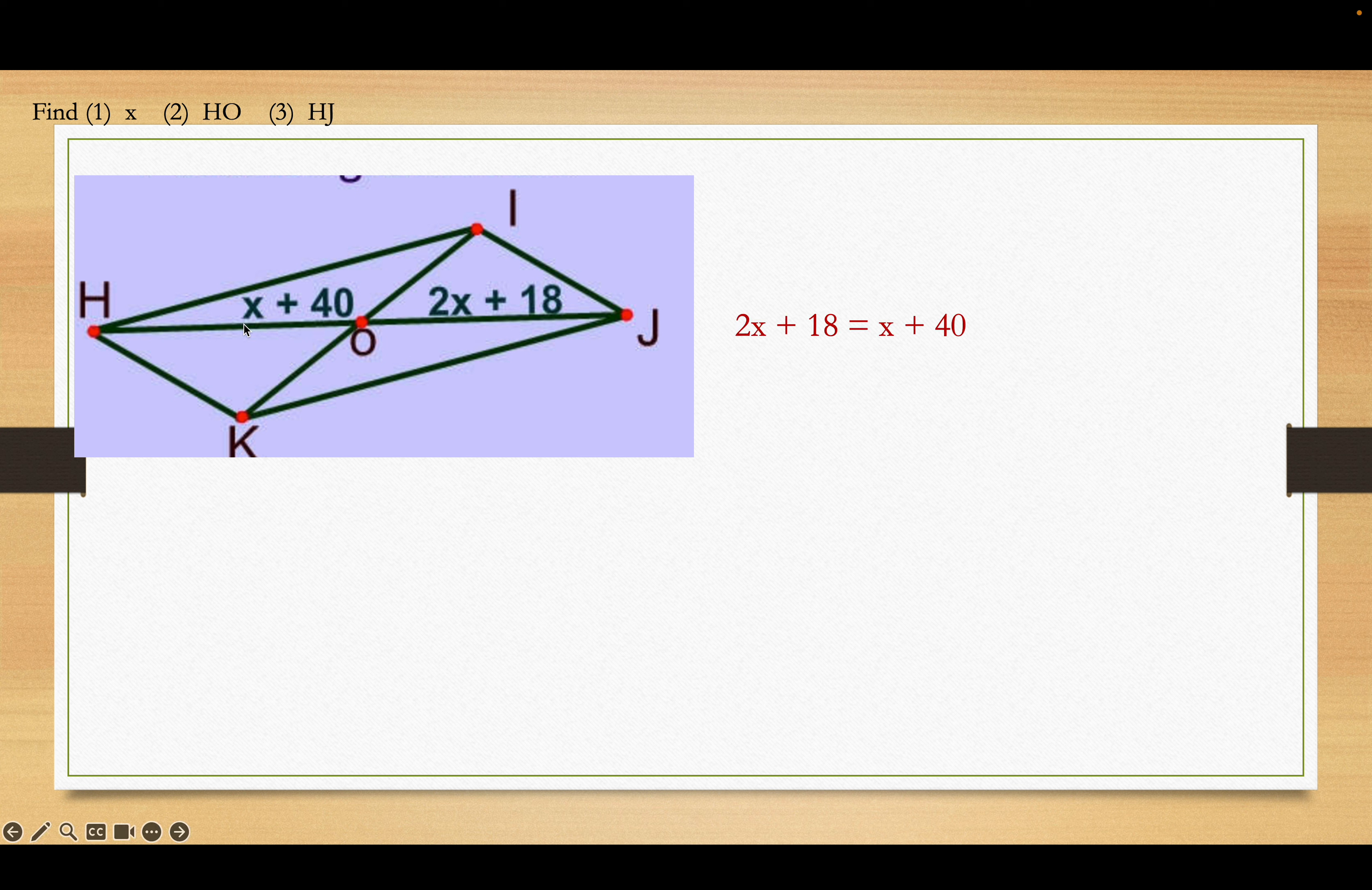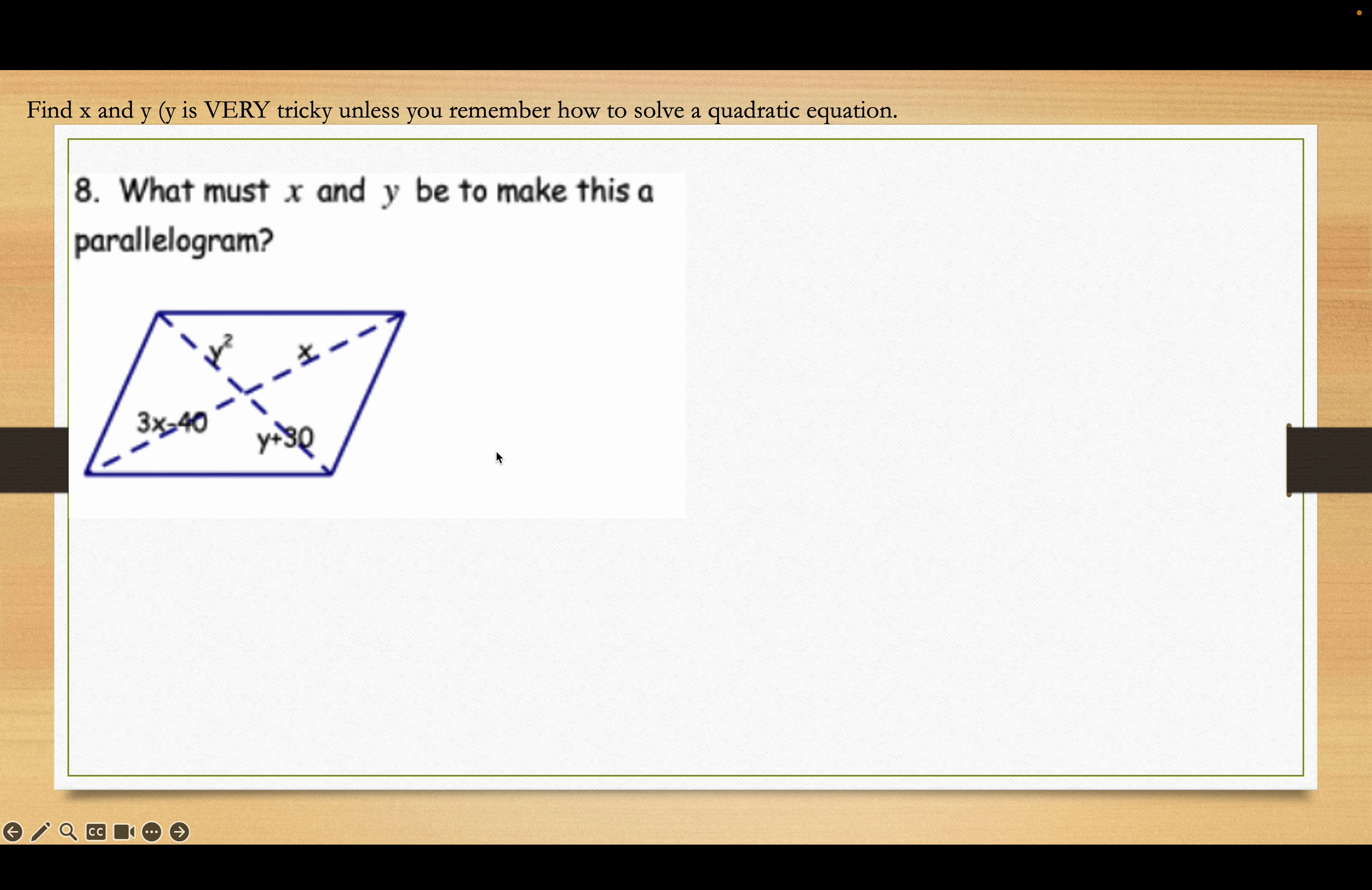Okay, so, diagonals bisect each other. That means they cut each other in half. So, that means the two pieces, X plus 40 and 2X plus 18, have to be equal. Subtracting X, subtracting 18, and I get X is 22. So, I did the first part of the problem. Now, find HO. HO will be X, which is 22, plus 40. So, that's 62. Now, HJ is two equal pieces of 62. So, 62 times 2 is 124. Or, you could plug in the 22 for X here. Two times 22 is 44, plus 18 is 62. And, then 62 and 62 make 124.